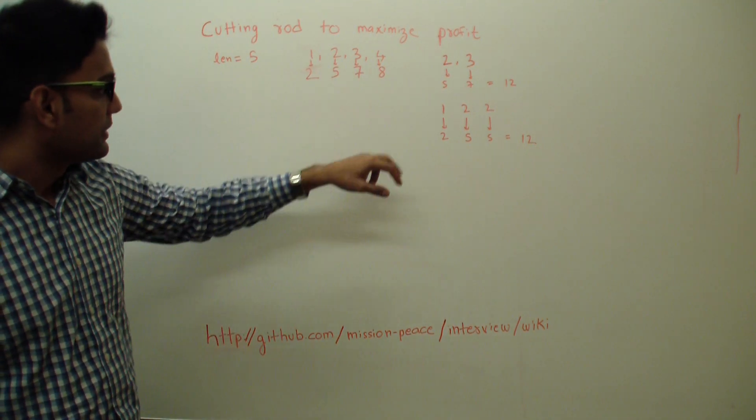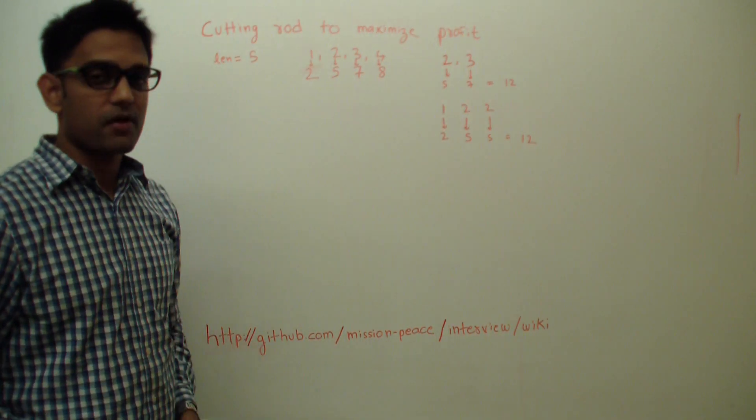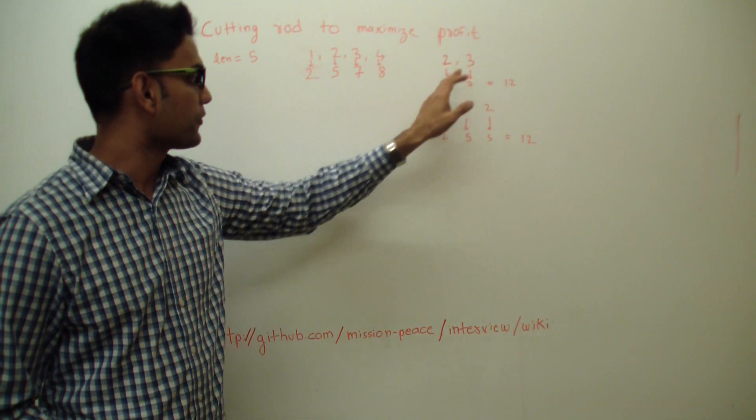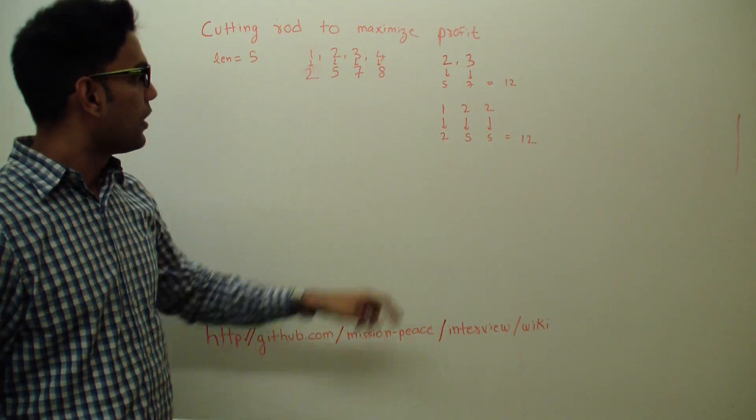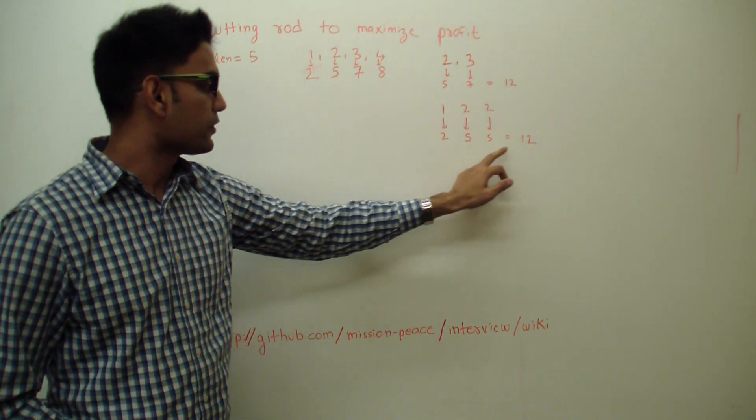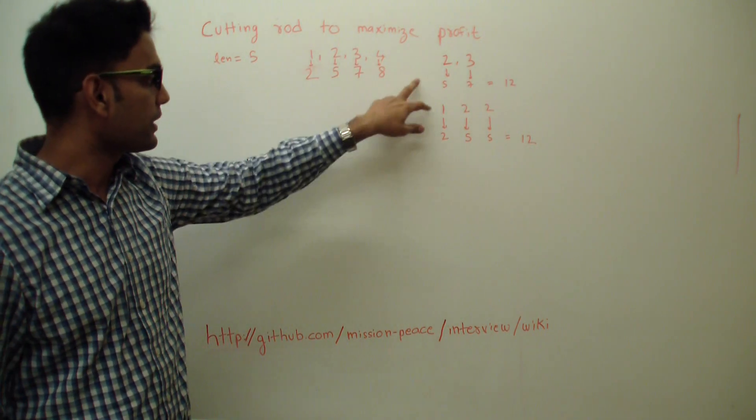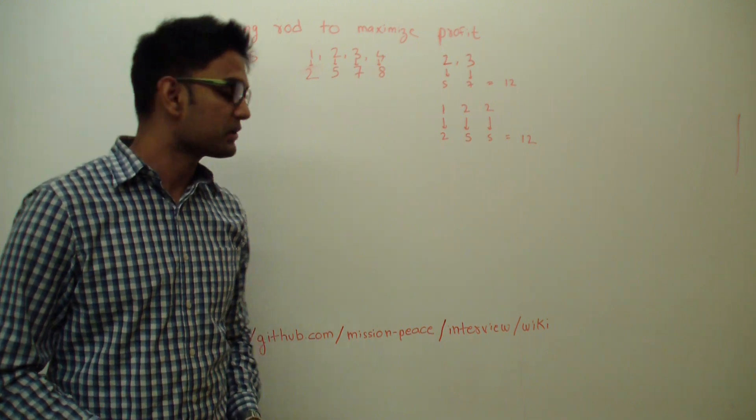For this example we have two possible solutions. One is either you cut the rod into lengths two and three and get a total profit of five plus seven, twelve dollars or you cut a rod into length one, two and two and again get a total profit of twelve dollars. So how do we come to these numbers? We'll use dynamic programming to solve this question.